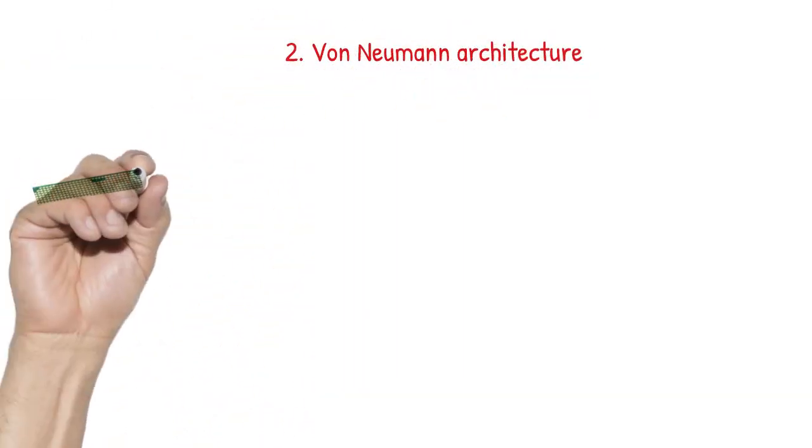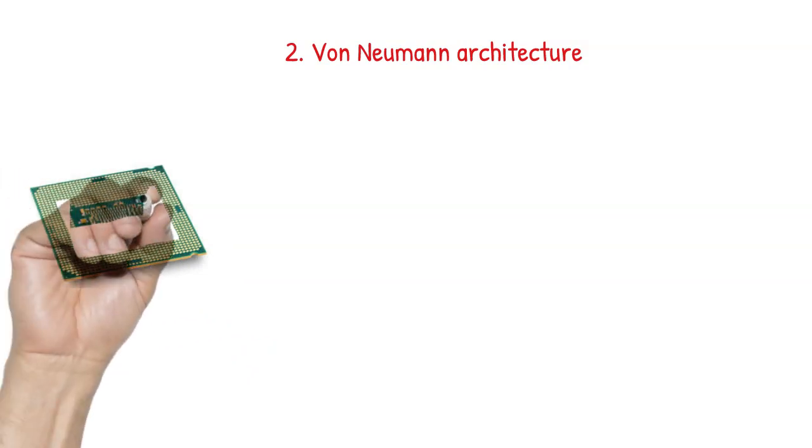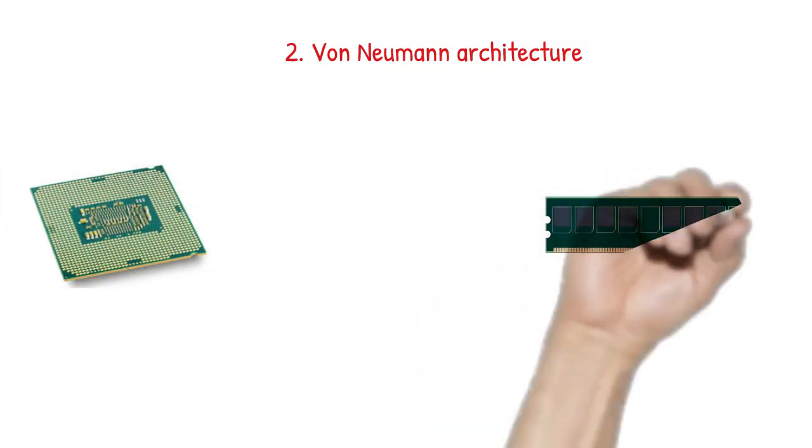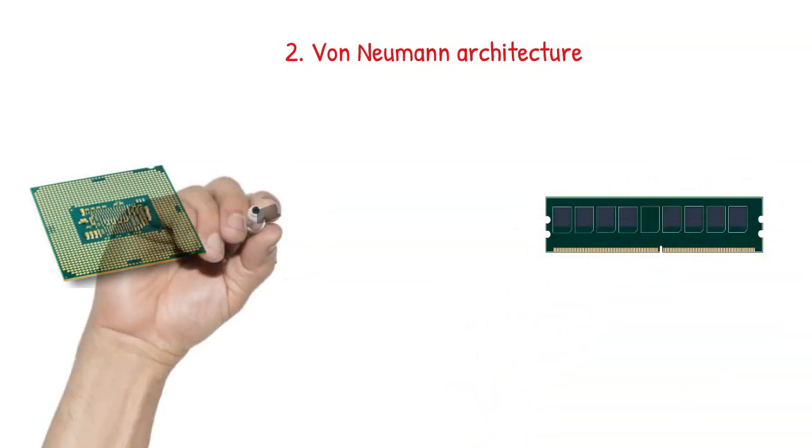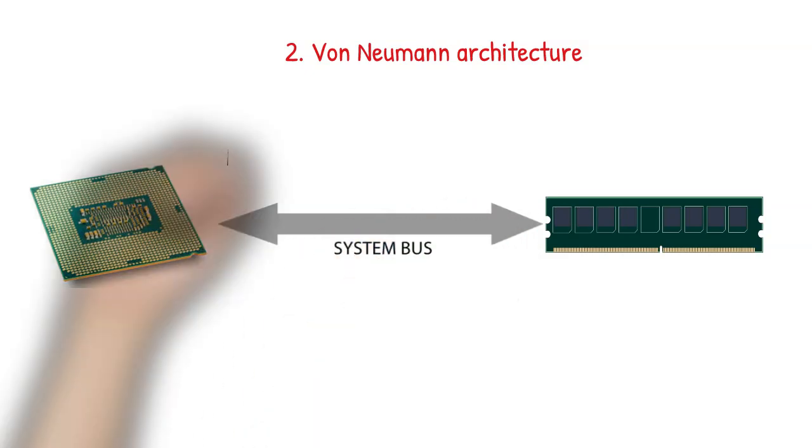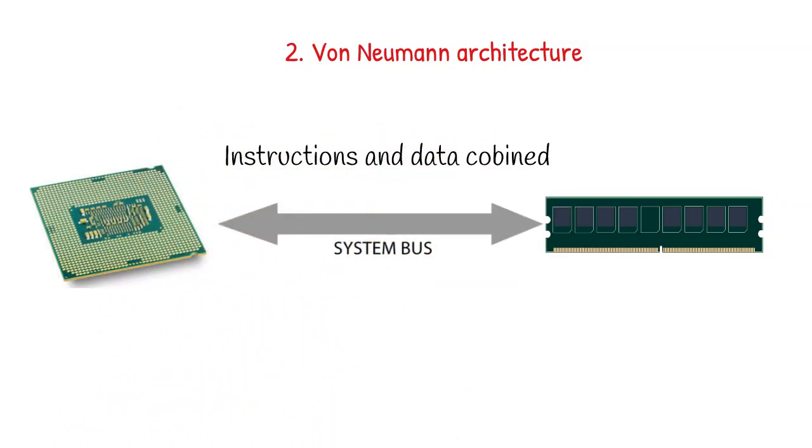The von Neumann architecture is a very common design for modern computers that store programs and data in the primary memory, i.e. the RAM or ROM. These are connected to the CPU over a shared bus which will fetch both the data and instructions at the same time.